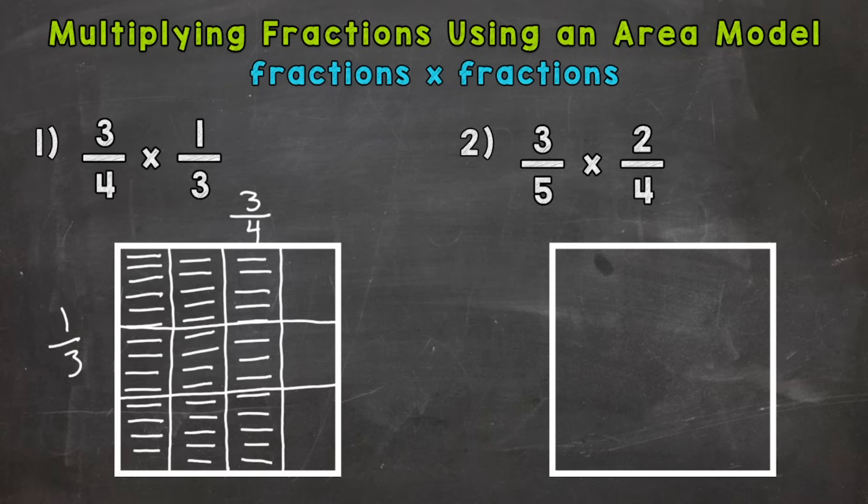Now that we have the thirds drawn in, let's fill in one-third. And I'm going to use diagonal lines here. That way I can tell the difference between my three-fourths and the one-third. So diagonal lines.